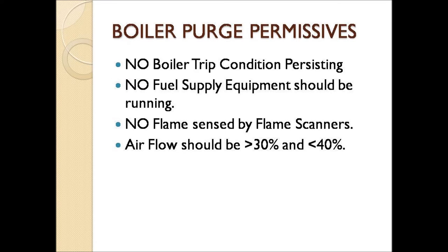In a power plant, for each and every operation there are certain permissives. Likewise, boiler purge also has some permissives. For ease of operation, we have divided these permissives into 4 major parts. The first is no boiler trip condition should be persisting. The second is no fuel supply equipment should be running. The third is no flame should be sensed by any flame scanner in the boiler furnace. The fourth is air flow should be greater than 30% and less than 40%.